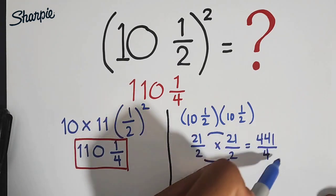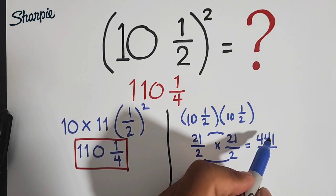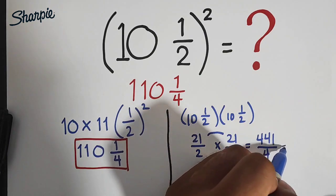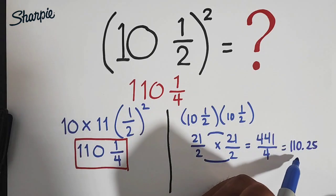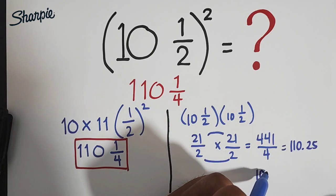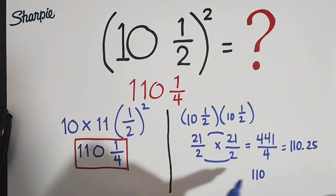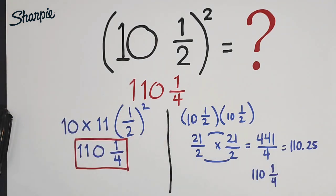And if you will divide this with the decimal, the answer is simply 110.25, in which 110 and then this 0.25 is equivalent to 1 fourth. That's why, as you can see, the answer is equivalent, using the shortcut and using this manual computation.